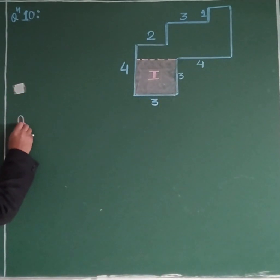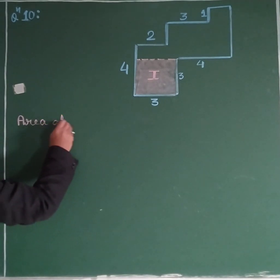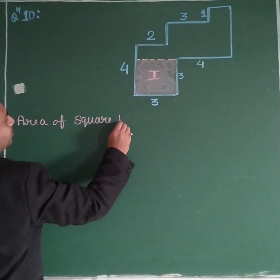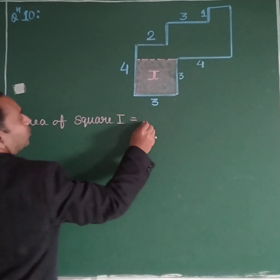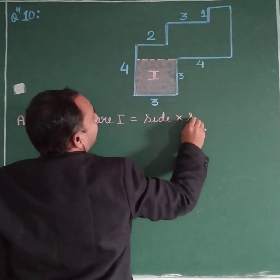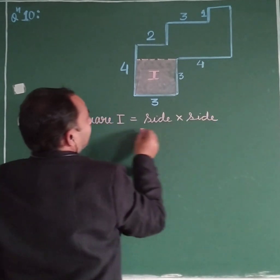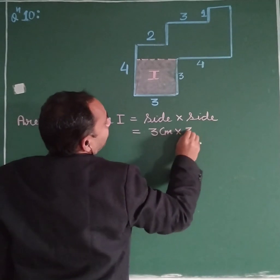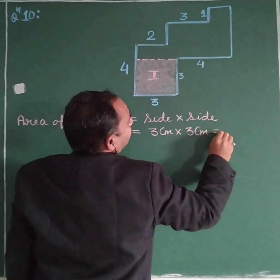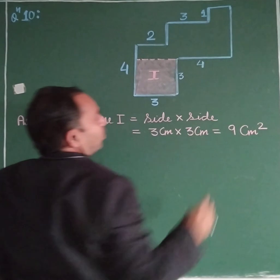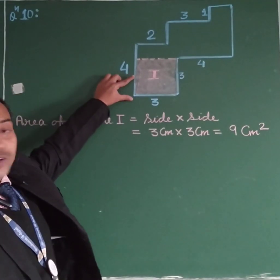Area of the square first: area equals side multiplied by side, that is 3 times 3, which equals 9 centimeters squared. Is this clear, class?